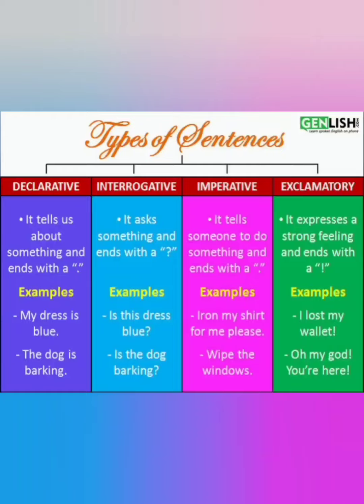Once more, let's review all four types: declarative sentence, interrogative sentence, imperative sentence, and exclamatory sentence. A declarative sentence tells about something and ends with a full stop; it has positive and negative (affirmative and negative) sentences. An interrogative sentence asks something and ends with a question mark. An imperative sentence tells someone to do something and ends with a full stop. An exclamatory sentence expresses a strong feeling and ends with an exclamation mark.